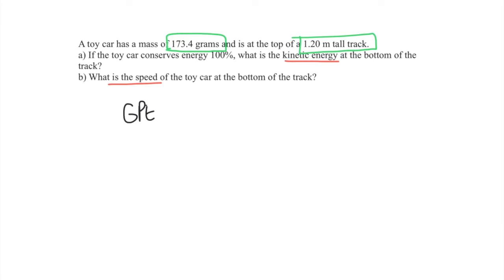The equation for gravitational potential energy is mass times gravity—the acceleration due to gravity—times the height that the object is from the ground. One thing we have to remember is that we've got to use SI units. In this example the mass is in grams, so we have to convert that to kilograms first. To do that you just divide by a thousand, and we end up with 0.1734 kilograms. Then we can plug this into our equation.